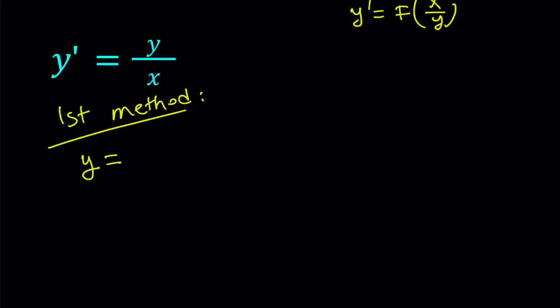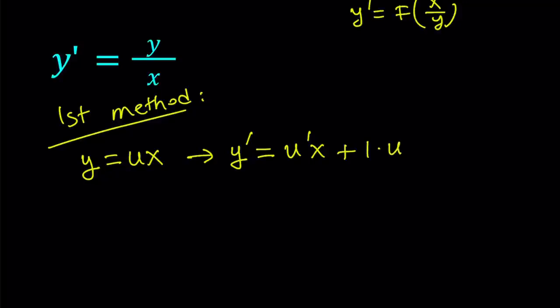I'm going to set y equals ux. From here I can differentiate both sides to find out what happens with y prime and u prime. So y prime is going to be — now u is a function of x because y is a function of x — so if you differentiate this using the product rule, you get y prime equals u prime x plus u.